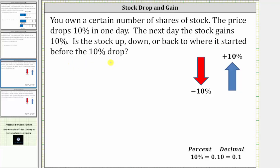It might seem like if a stock drops 10% and then gains 10%, the price should be back to where it started, but that's not actually the case, and let's show why.